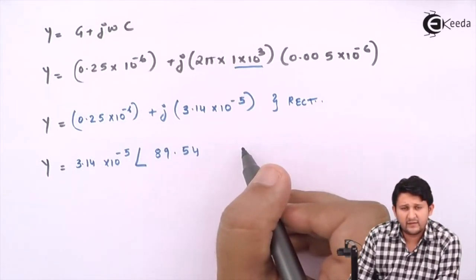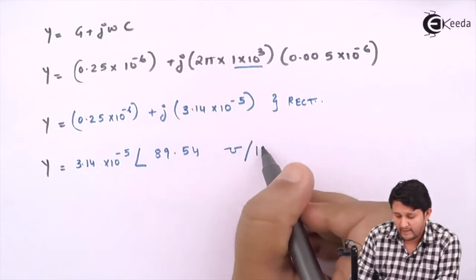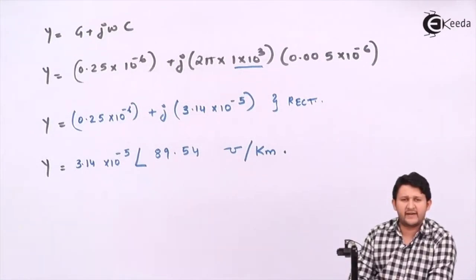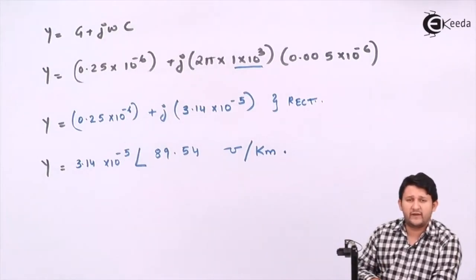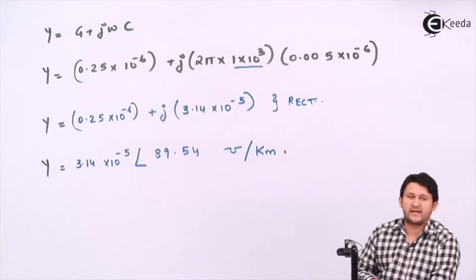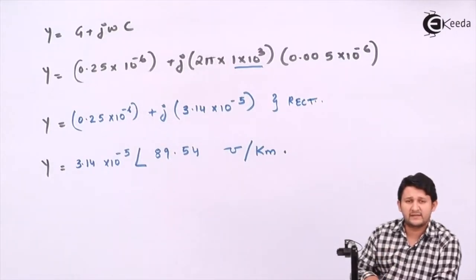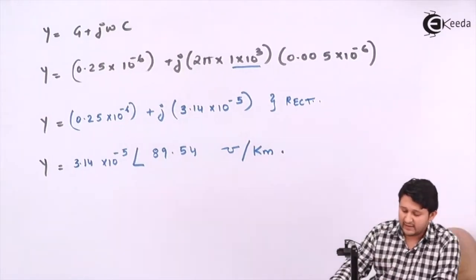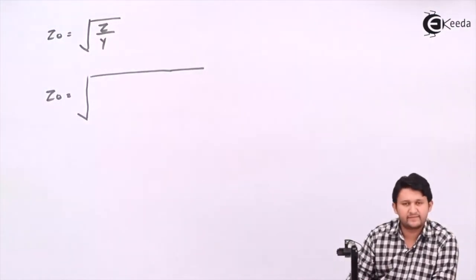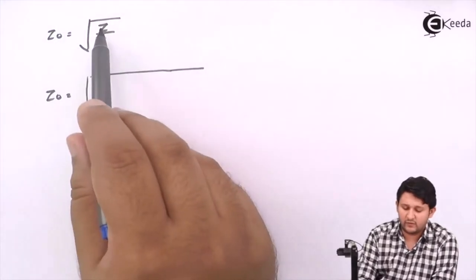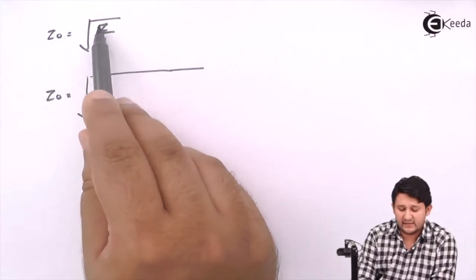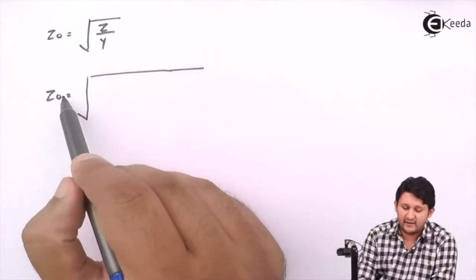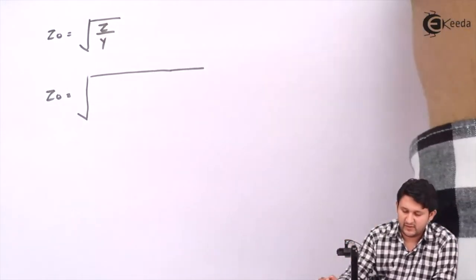Y is admittance — the inverse of impedance — and its unit is siemens per kilometer. After finding impedance Z and admittance Y, we can now find the characteristic impedance. The formula for characteristic impedance is Z₀ = √(Z/Y). Note that for Z₀ the formula is Z divided by Y, whereas for the propagation constant γ it is Z multiplied by Y — please don't interchange the formulas.